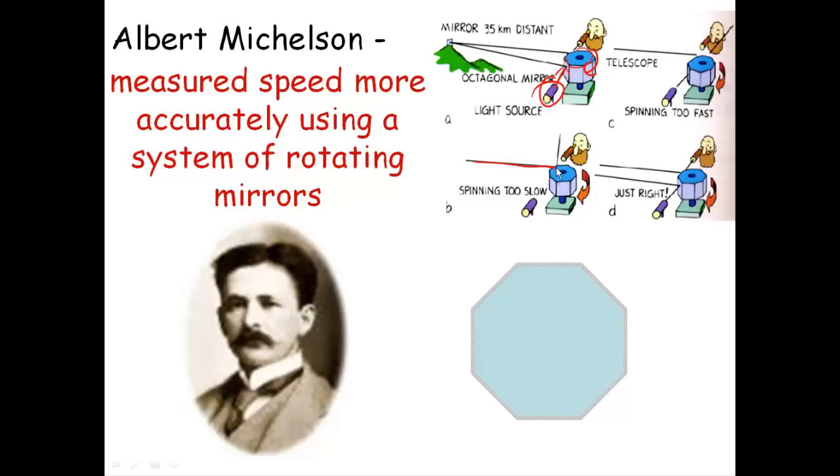Because if it's going too slow, it's going to miss his eye this way. If it's going too fast, it's going to miss his eye the other way. But if he does it just right, at just the right speed, you should see the light not blink, and it should be a continuous flash. So that's what he did. And he figured out, based on the rate of rotation of that octagonal mirror, and the distance the light had to travel, 35 kilometers each way, or a total of 70 kilometers, exactly how fast light travels.